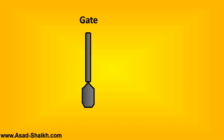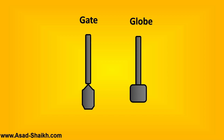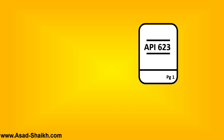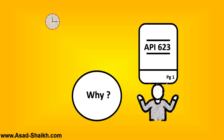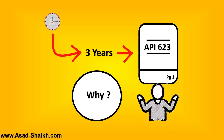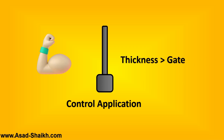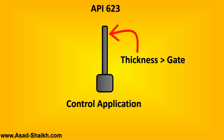Since gate valves and globe valves work in a similar way, you might think API 600 can also be applied to globe valves — and it was, for many years. But then API 623 was created as a standard specifically for globe valves. The team spent three years preparing it. Their research found that globe valves are especially used for control applications and require a higher thrust to close, meaning the stem thickness must be greater than that of gate valves.